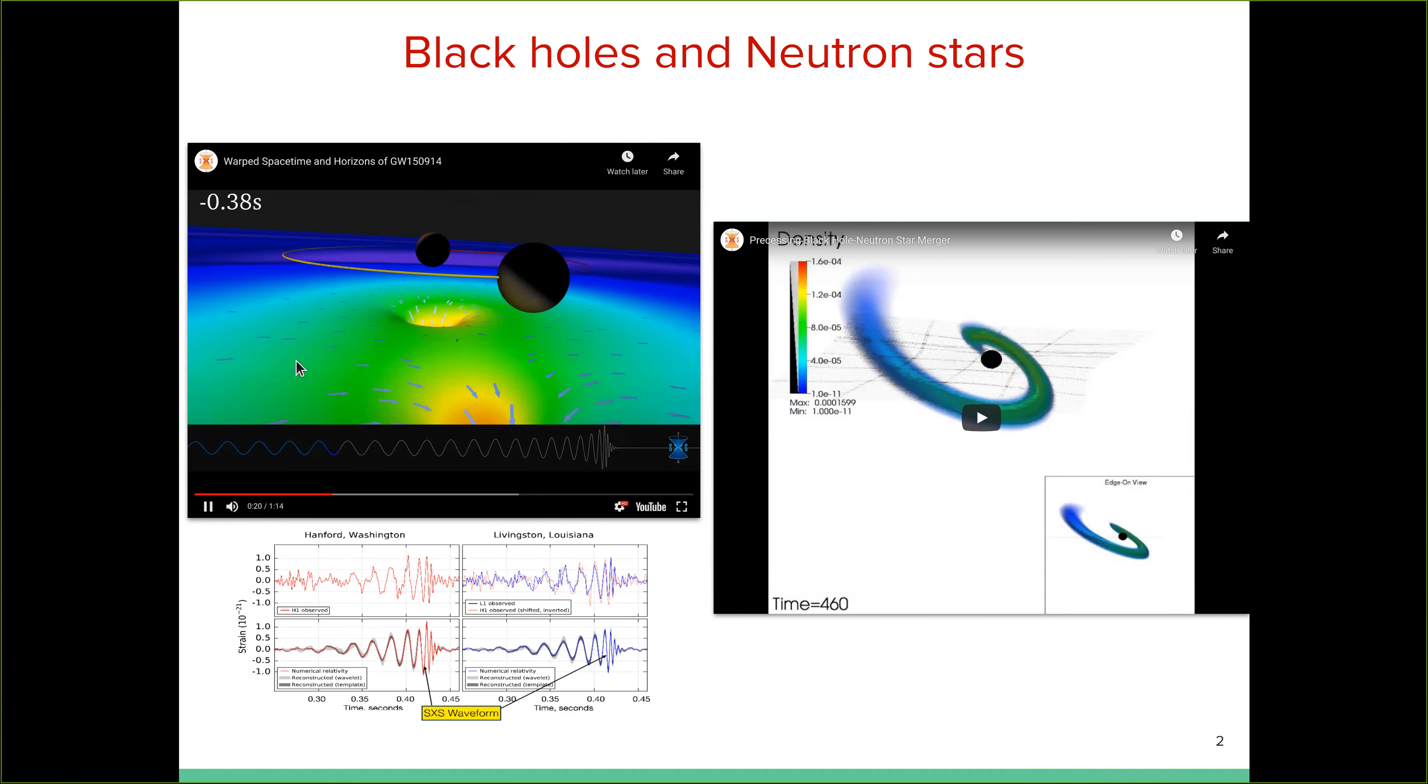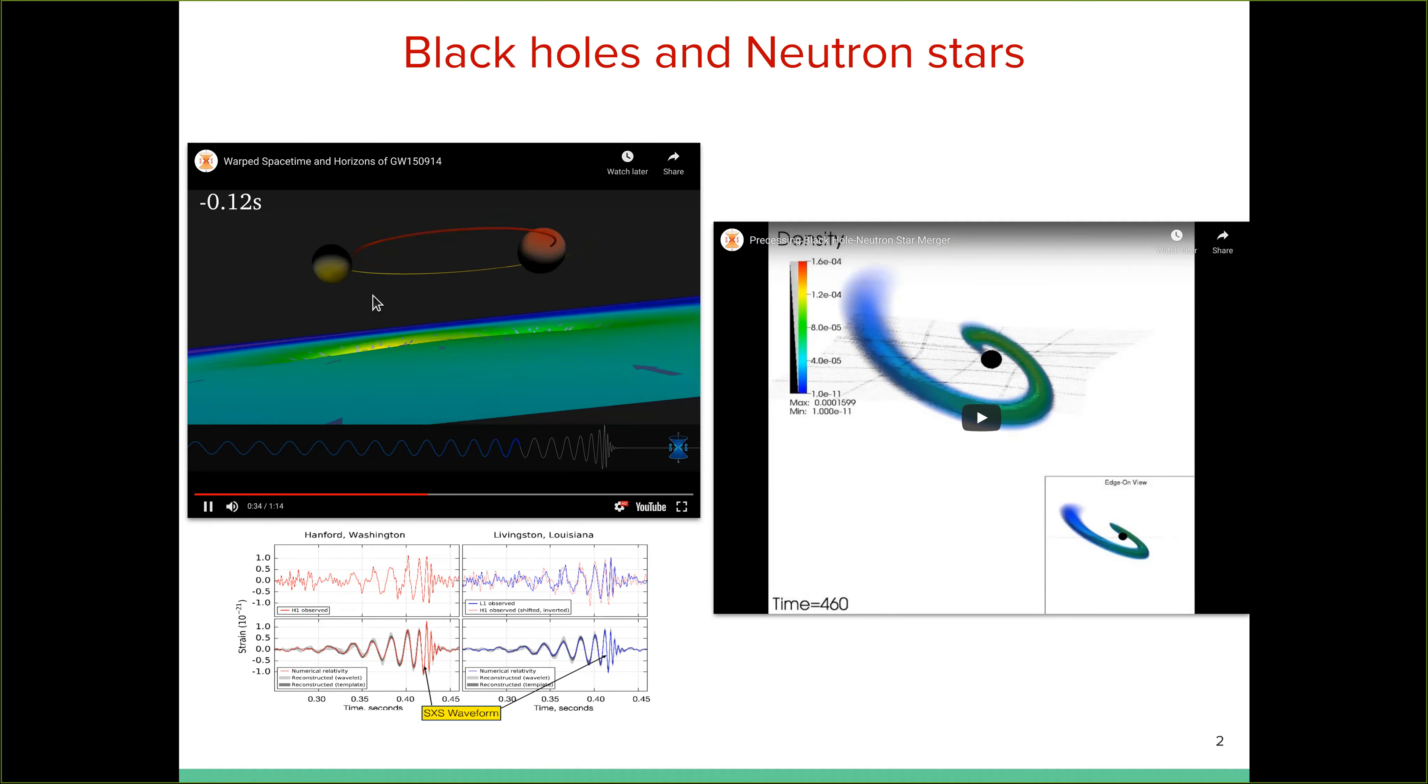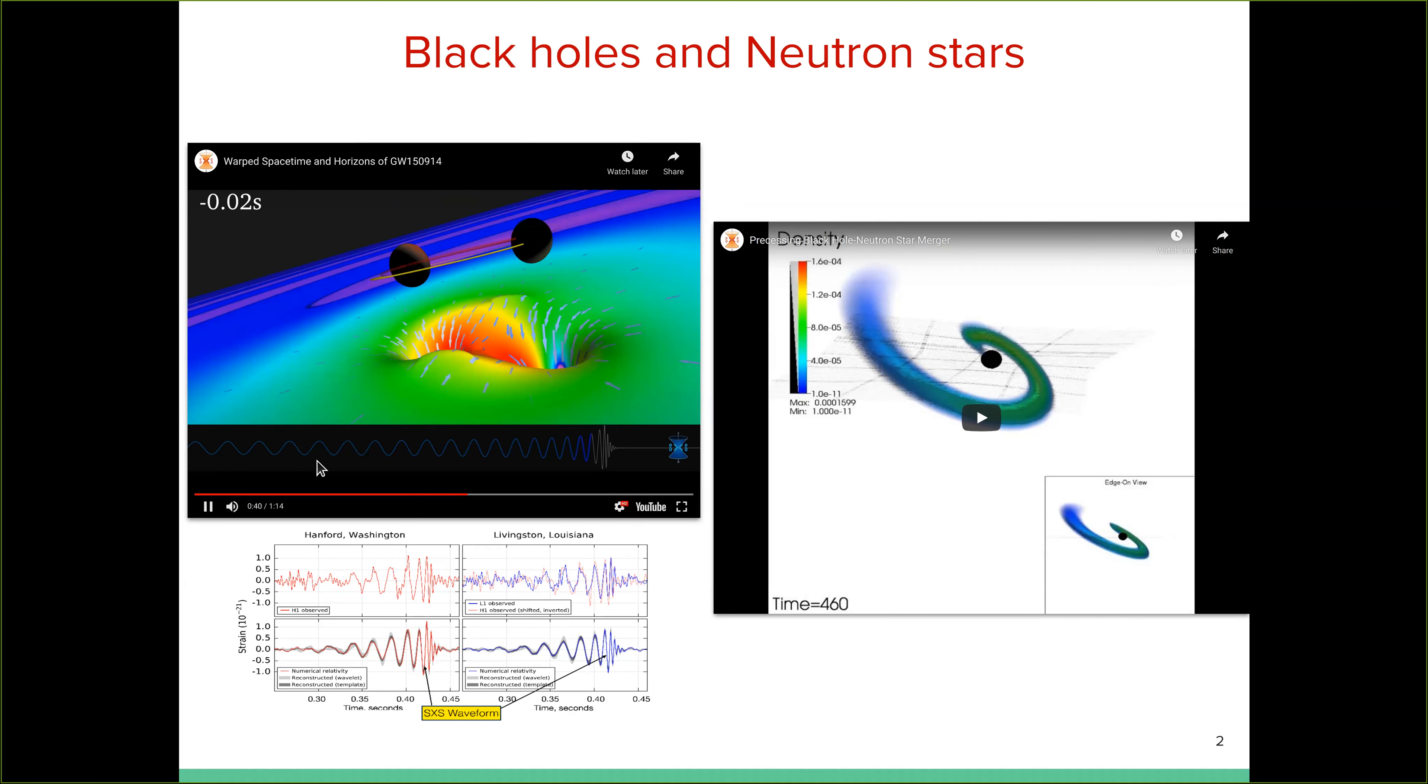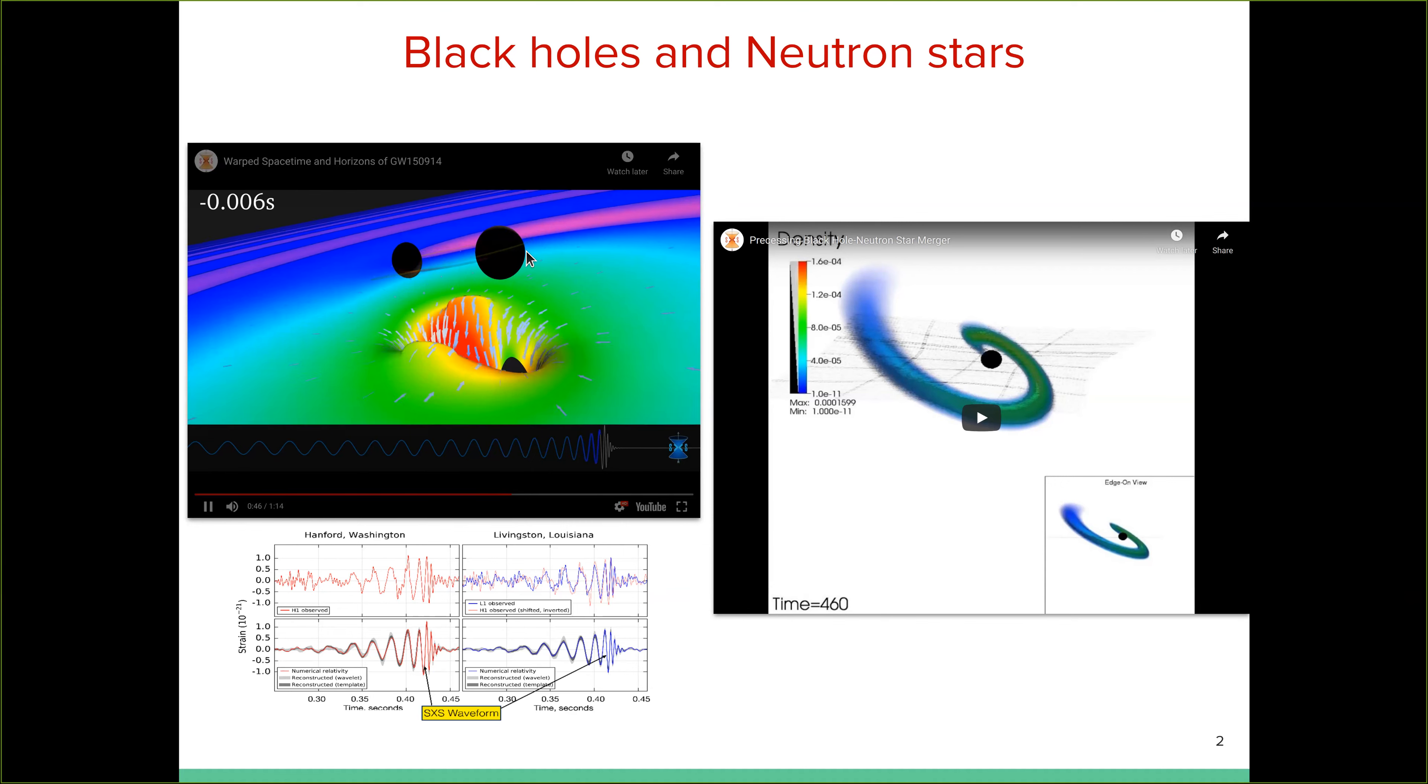Where the two black holes have masses and spins corresponding to the first gravitational event that LIGO detector saw five years ago. And the colors in here show the curvature of three-dimensional space. And, sorry, the color actually show the time dilation and the depth here show the curvature of 3D space.